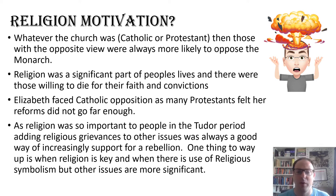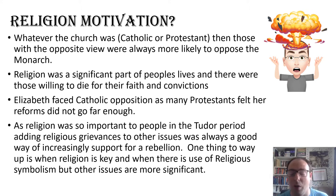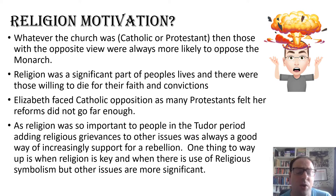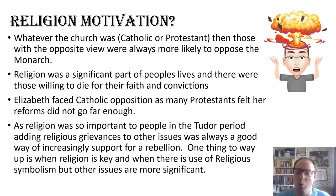Elizabeth actually faced opposition from both Catholics and Protestants, because the Catholics disliked the fact that she was Protestant, and many Protestants felt that her reforms didn't go far enough. In Elizabeth's example, you can't fully please either side, though you could argue that ultimately she does a very good job in finding a route that is Protestant but moderately Protestant, allowing what are known as church papists — people who were Catholic but could find enough about Elizabeth's church that they didn't need to rebel against it. As religion was important to the lives of people in the Tudor period, tuning into or raising religious grievances is always a good way of increasing support for your rebellion.